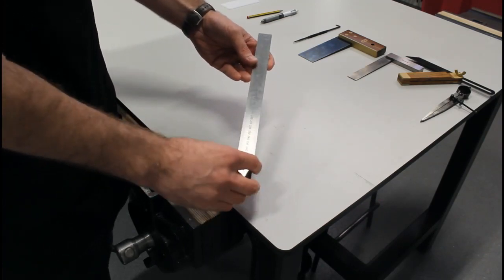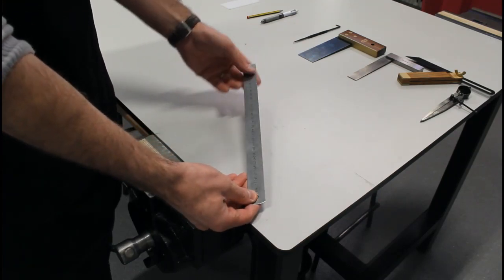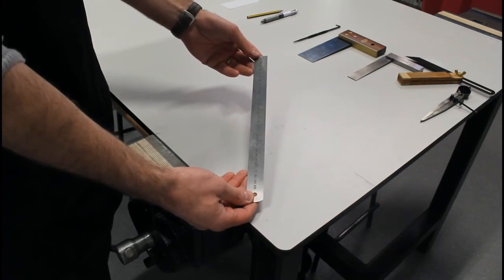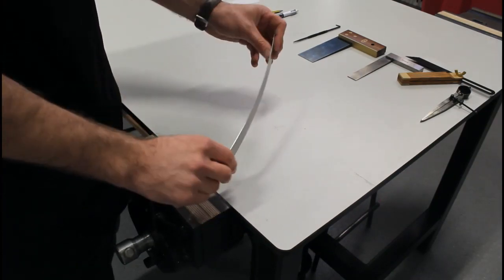In our subject, we work in millimeters mostly. Not centimeters, not inches, millimeters mostly. So this is known as a steel rule, made of steel.